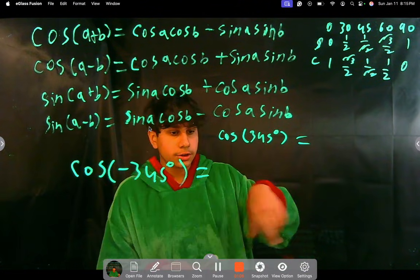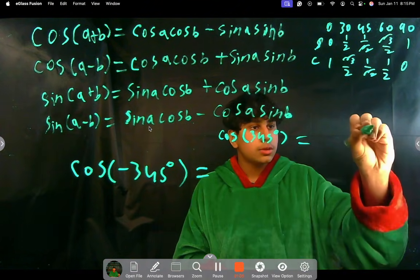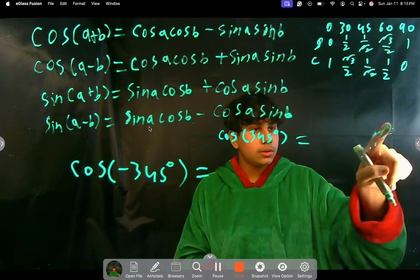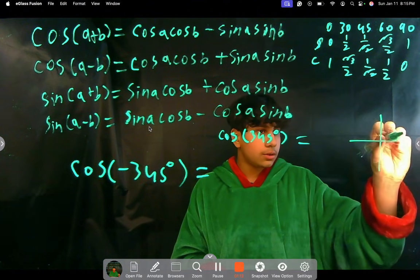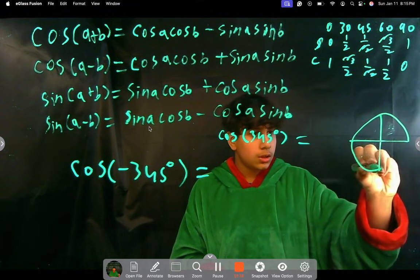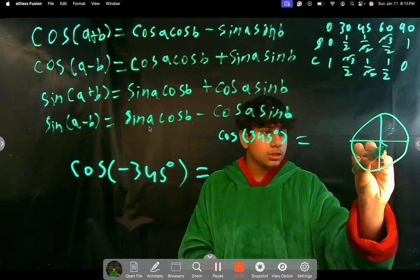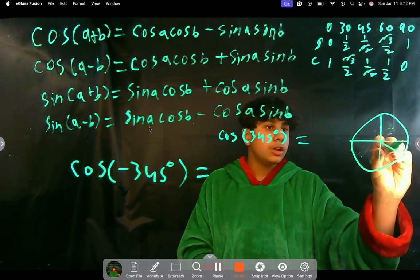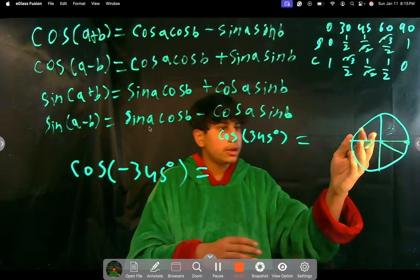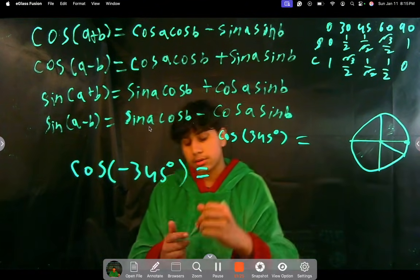imagine the entire unit circle that we have. So in our unit circle here, you can imagine 345 degrees is going to be somewhere here, just before the 360 degree mark. It went all the way around, and then this is about 345 degrees.